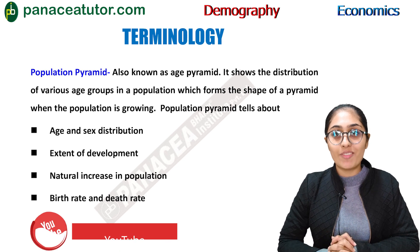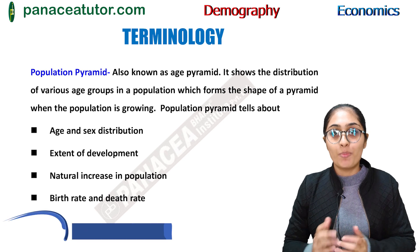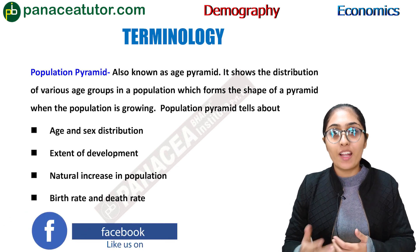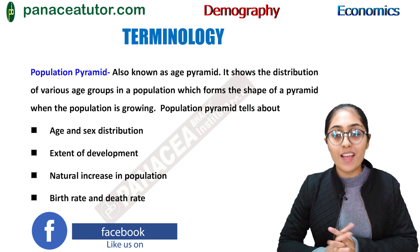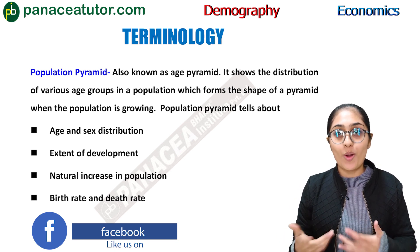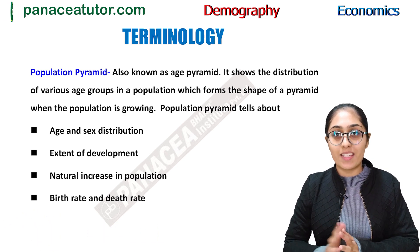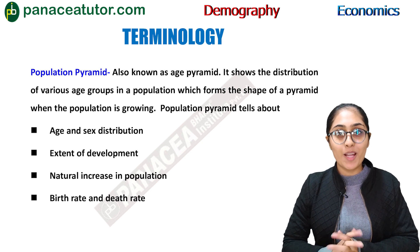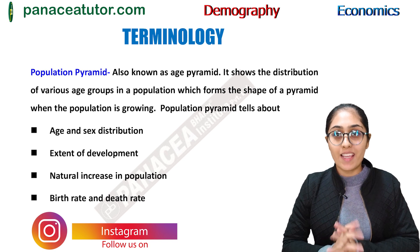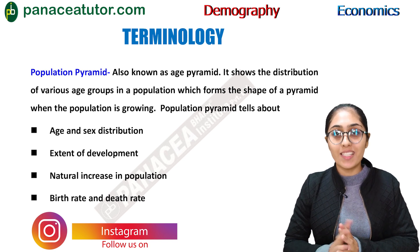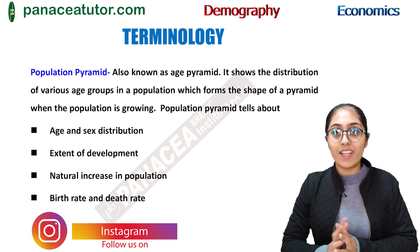The first terminology we will study is Population Pyramid. It is also known as Age Pyramid. It tells about the growth rate of population among various age groups. The Population Pyramid is dependent mainly upon four factors: age and sex distribution, natural increase in population, extent of economic development, and birth rates and death rates.